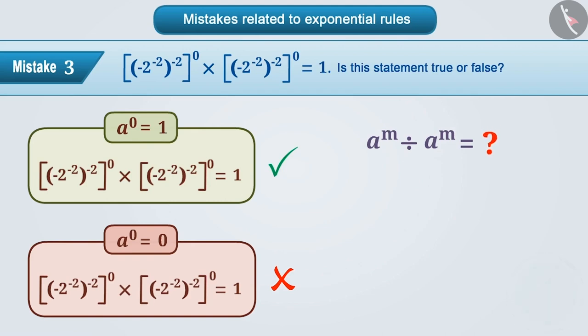Absolutely right. Since the values of both the numerator and the denominator are equal, the result will be 1. That is, a to the power m divided by a to the power m equals 1.